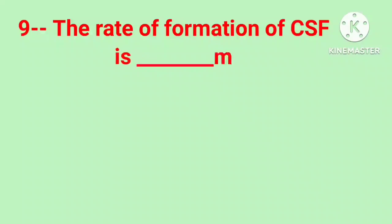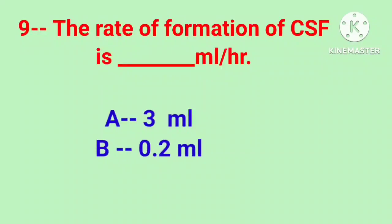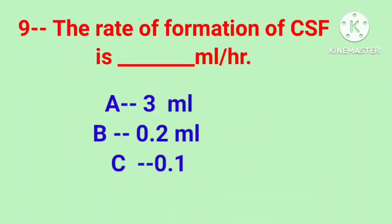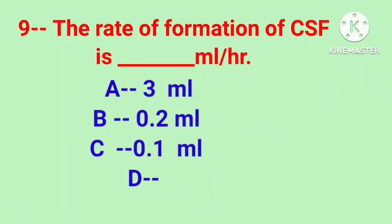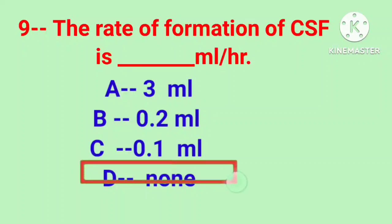Question number 9. The rate of formation of CSF is blank ml per hour. Option A, 3 milliliters. Option B, 0.2 milliliters. Option C, 0.1 milliliters. Option D, none. The rate of formation of cerebrospinal fluid is 0.3 milliliters per minute, then per hour it is about 18 milliliters. That's why the correct option is option D.